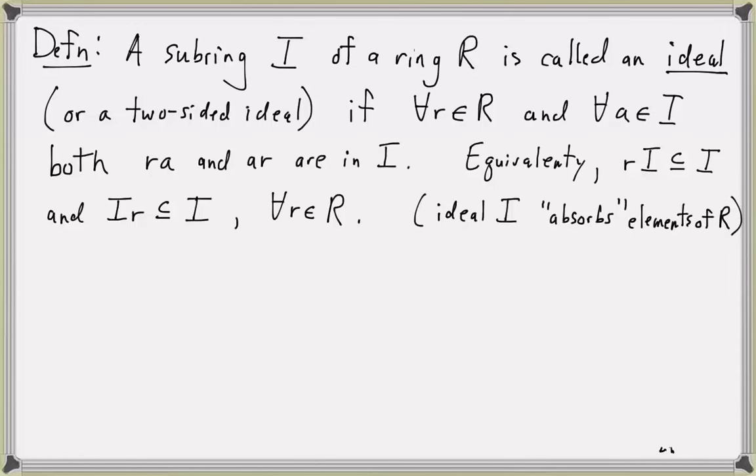To show that a subset I of a ring R is an ideal, it's necessary to show that it's a subring and also that it is closed under multiplication by all elements of R — not just closed under multiplication by elements of I.